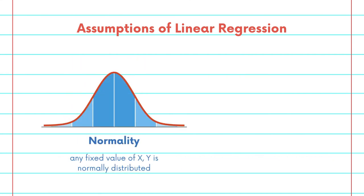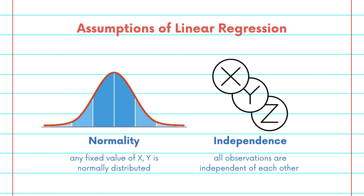And thirdly, normality. For any fixed value of x, y is normally distributed. And lastly, independence. All the observations are independent of each other.